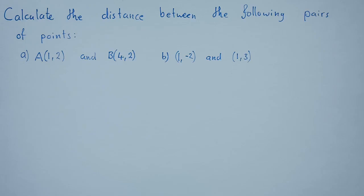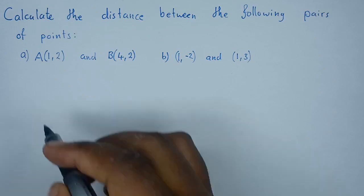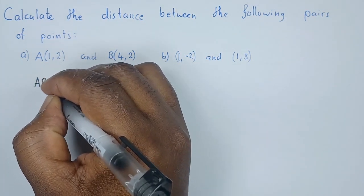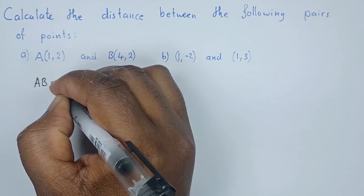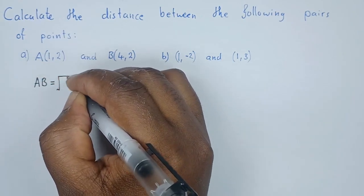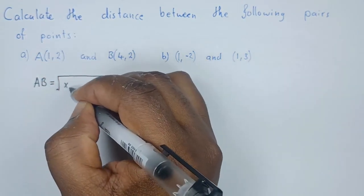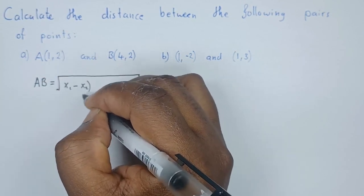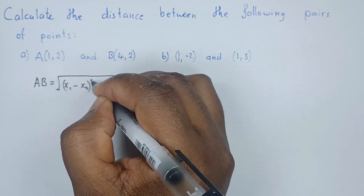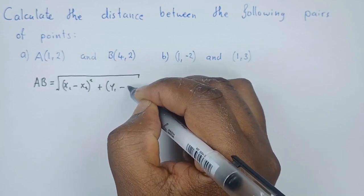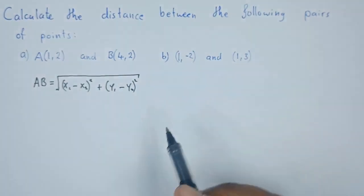Hi guys. So how do we calculate the distance between these pairs of points? It's important to note that in coordinate geometry, the distance for a, b in this case will be given by the formula: the square root of (x1 minus x2) squared plus (y1 minus y2) squared.